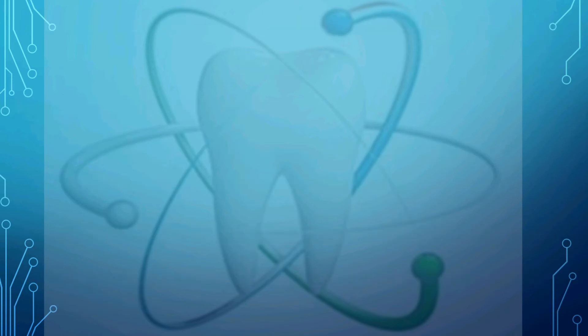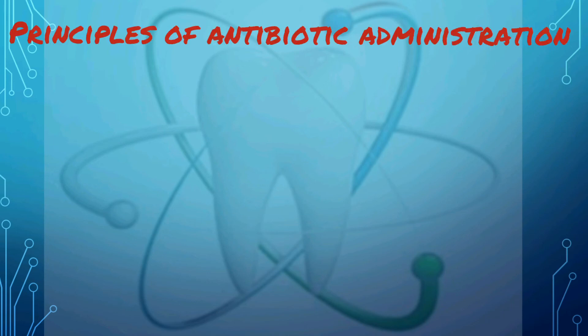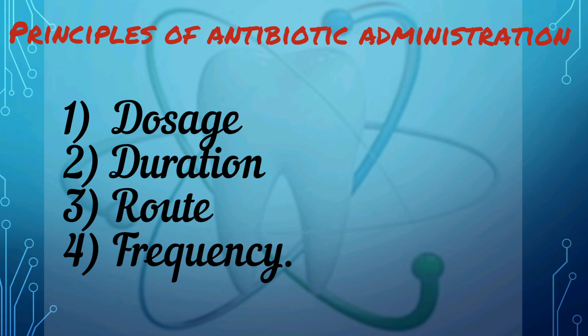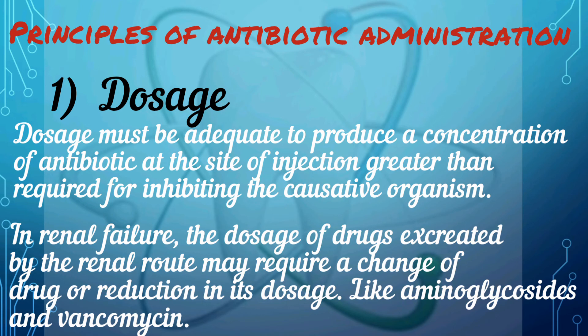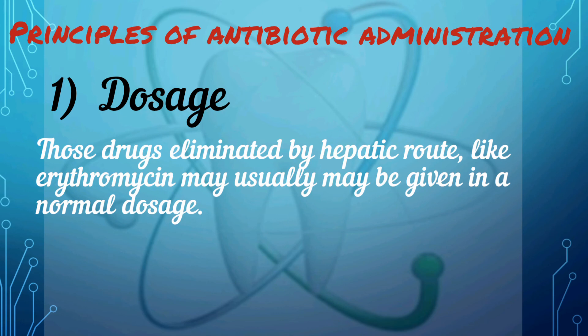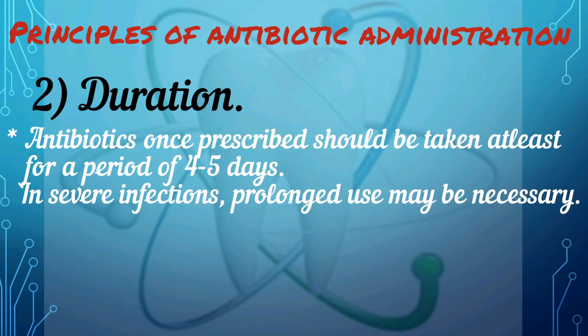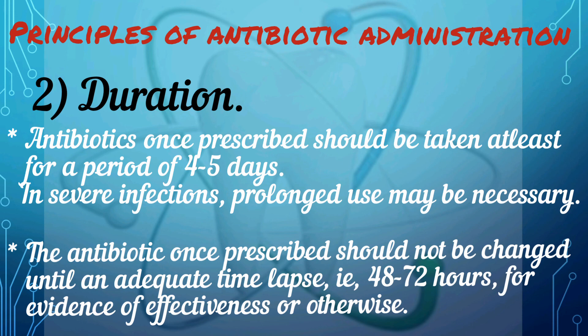Now we can discuss the principles of antibiotic administration — that is, dosage, duration, route, and frequency. The dosage must be adequate to produce a sufficient antibiotic concentration at the site of infection to inhibit the causative organism. In renal failure, dosage of drugs excreted by the renal route may require change or reduction — such as aminoglycosides and vancomycin — whereas drugs eliminated by the hepatic route, like erythromycin, may usually be given in normal dosage. Antibiotics should be taken for at least four to five days; in severe infections, prolonged use may be necessary. An antibiotic should not be changed until an adequate time lapse of 48 to 72 hours for evidence of effectiveness.